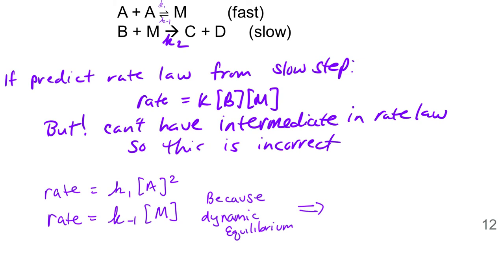But we can also say that rate equals K minus one times M. So now that's for the reverse reaction. But because we're in dynamic equilibrium, we can make them equal to each other. We can say that the rates are the same, which means K1 times A squared is equal to K minus one times M. I'm saying that these rates are equal to each other, which means these are equal to each other.